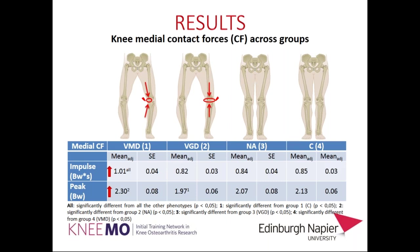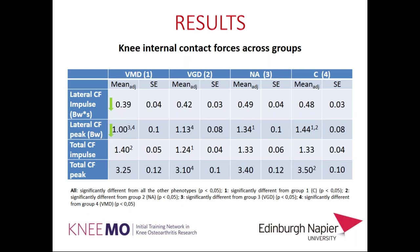Interestingly, subjects with varus and generalized disease have medial contact force comparable to controls or neutrally aligned subjects — contrary to what would be expected from their varus alignment. In the lateral compartment, the varus medial disease group had the lowest lateral contact force impulse and peak, though statistical significance varied. For total contact force, both the impulse and peak were comparable across all groups, suggesting it is not the total contact force that changes between groups, but rather the load distribution between compartments.